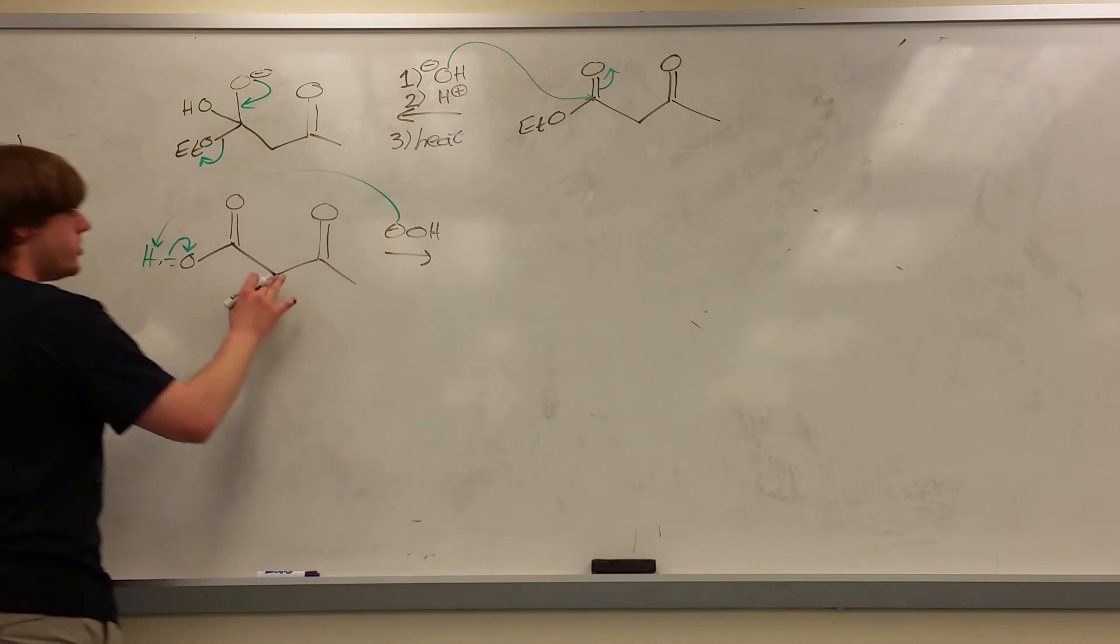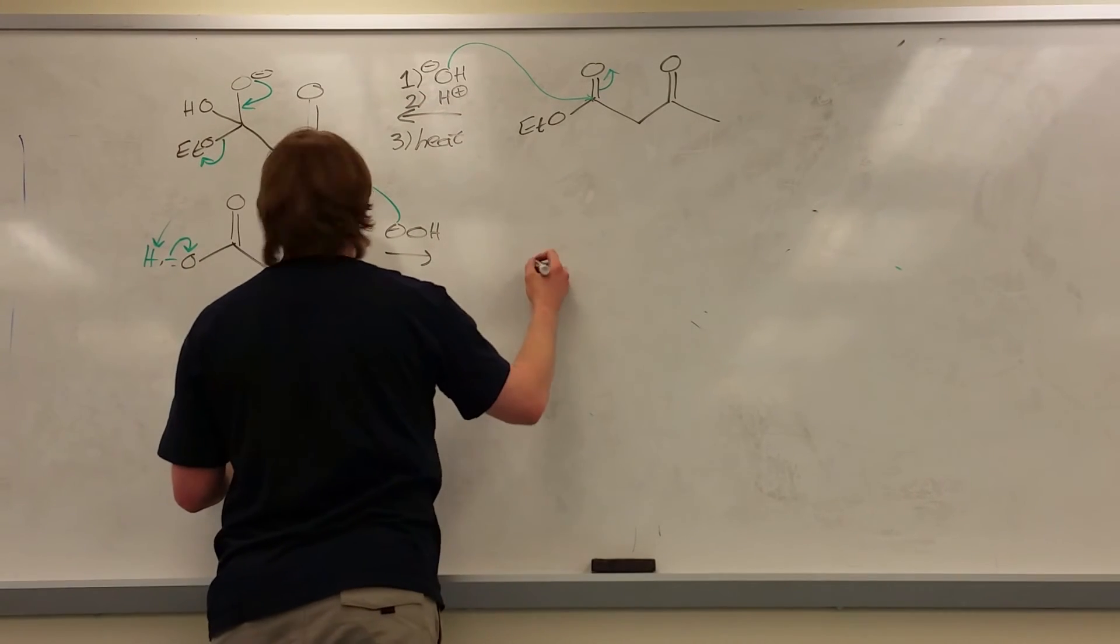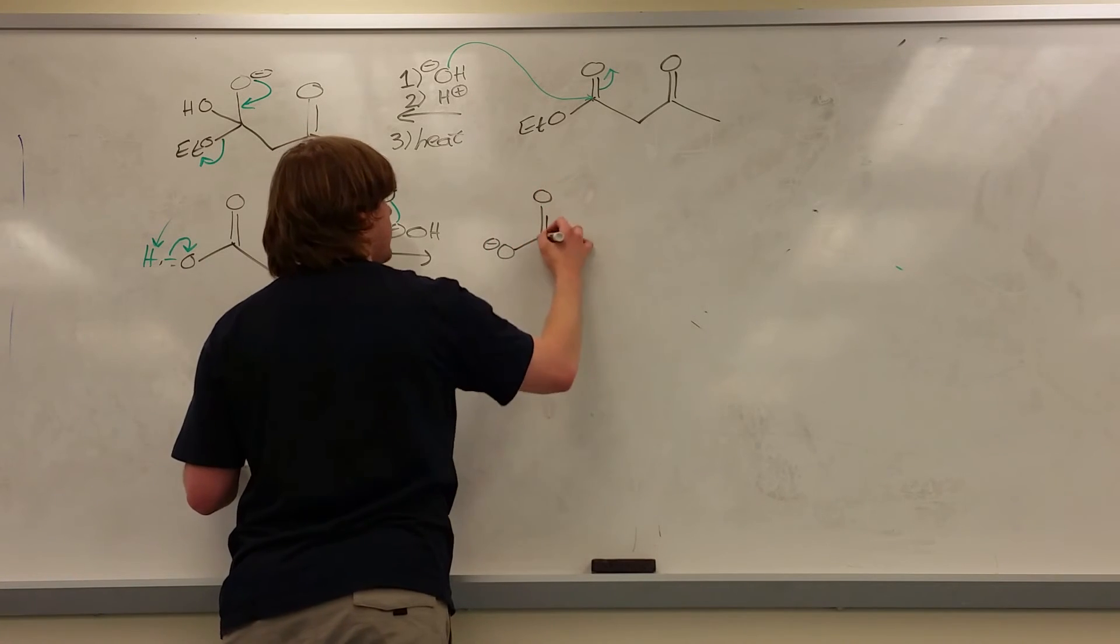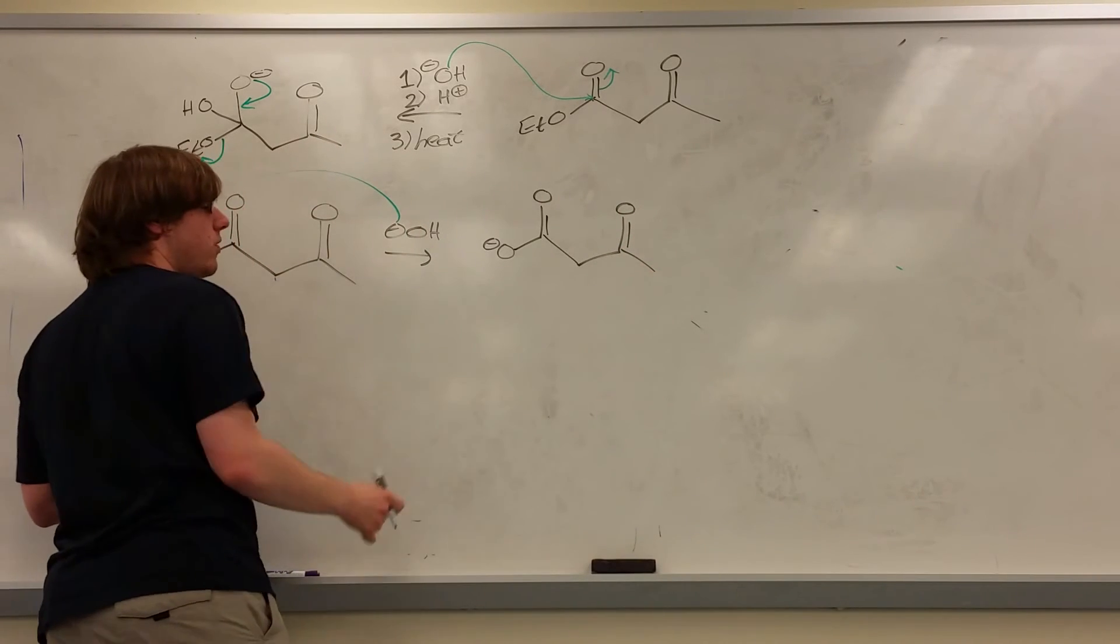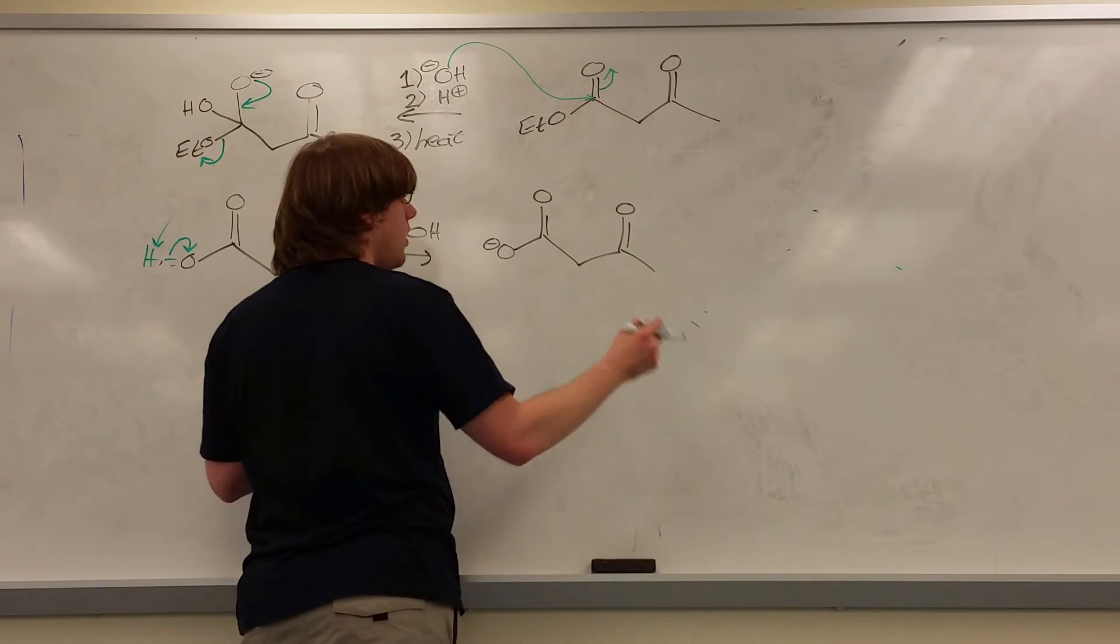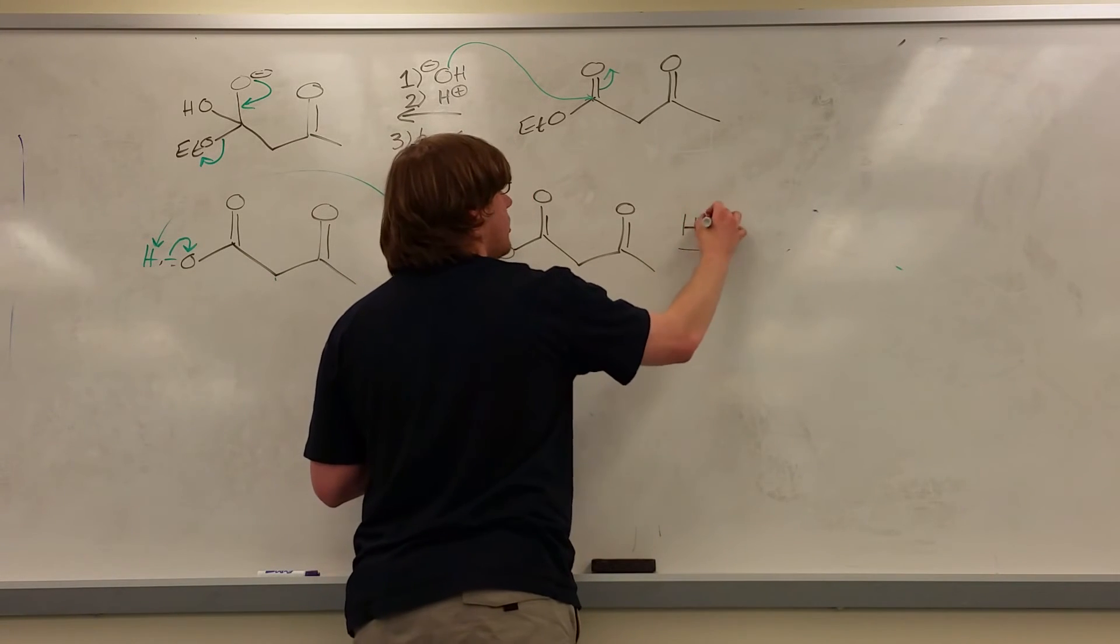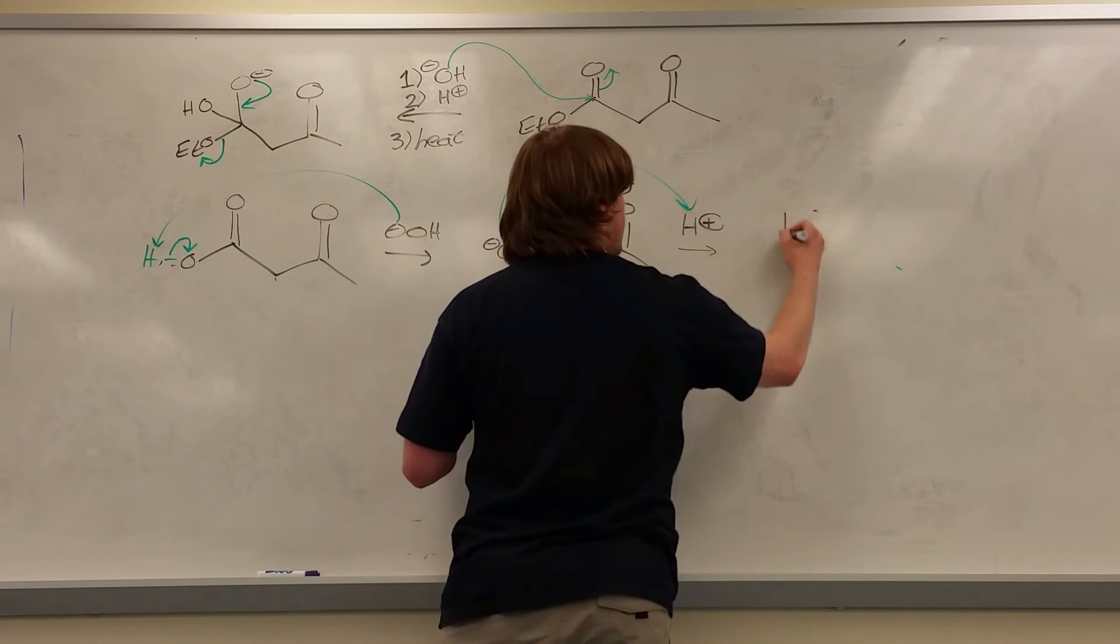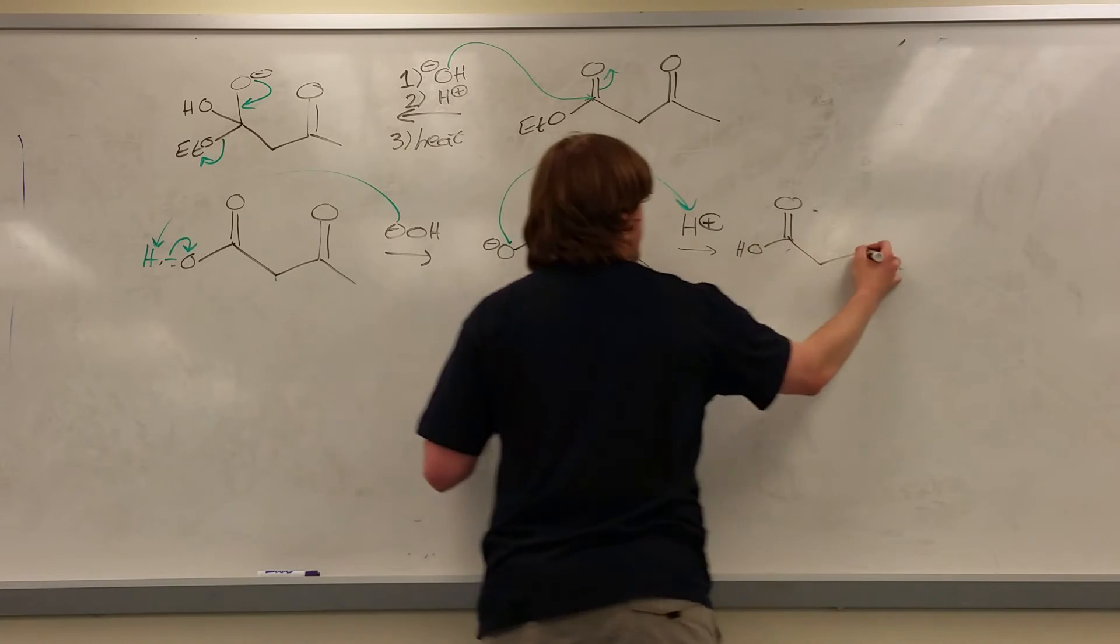Regardless of which proton it deprotonates, either this one or this one, that's the purpose of the H plus. All the H plus does is whatever anion you make, we're making sure it's not there at the end. So whether I pulled off from the middle alpha or from the OH group, all the H plus is going to do is make sure that that negative charge isn't there for long. And so the net result is still the carboxylic acid.